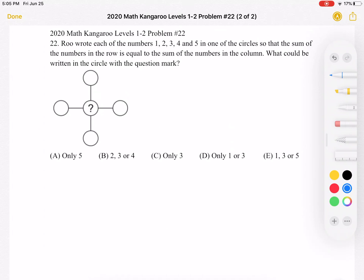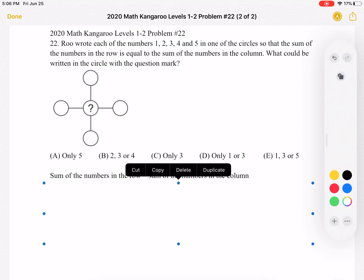So to start, a very important part of the problem, which I have rewritten down here, is that the sum of the numbers in the row is equal to the sum of the numbers in the column. So that's key to this problem, and let's move forward using that.